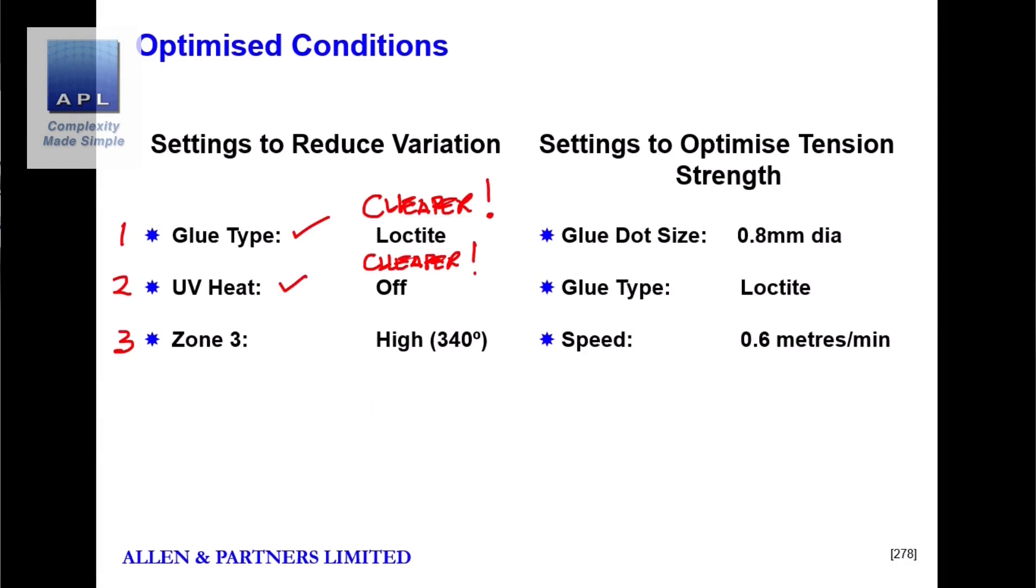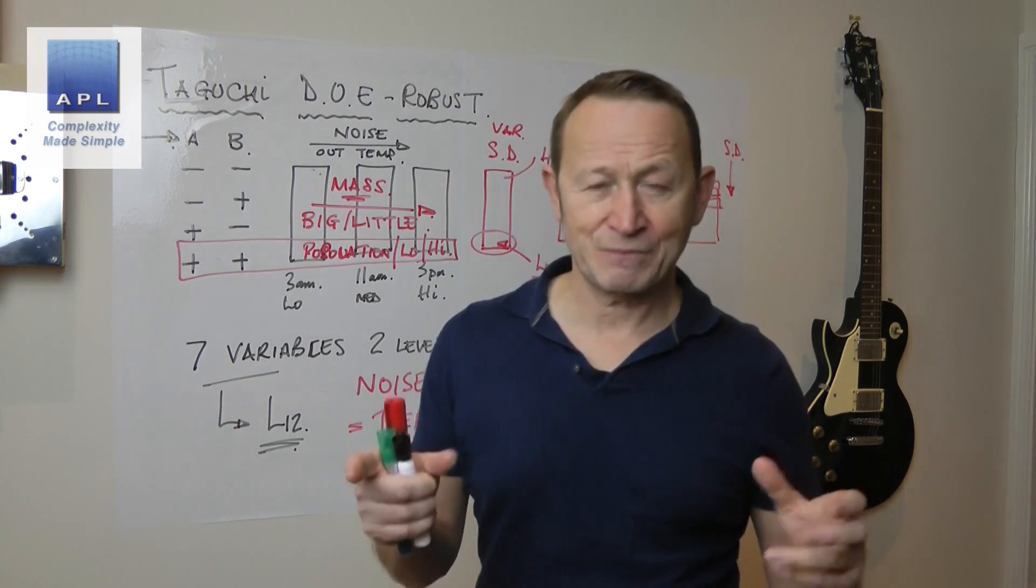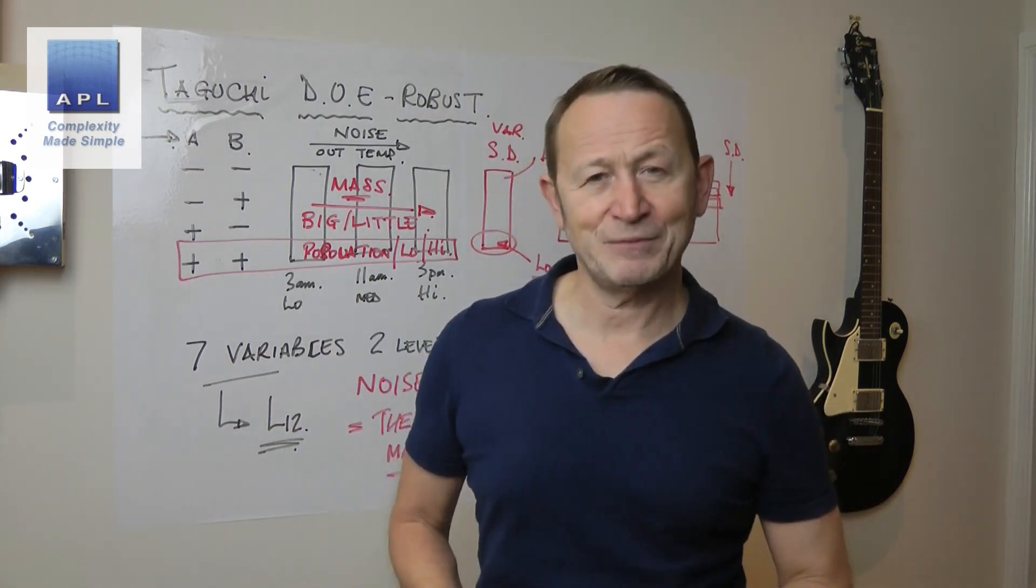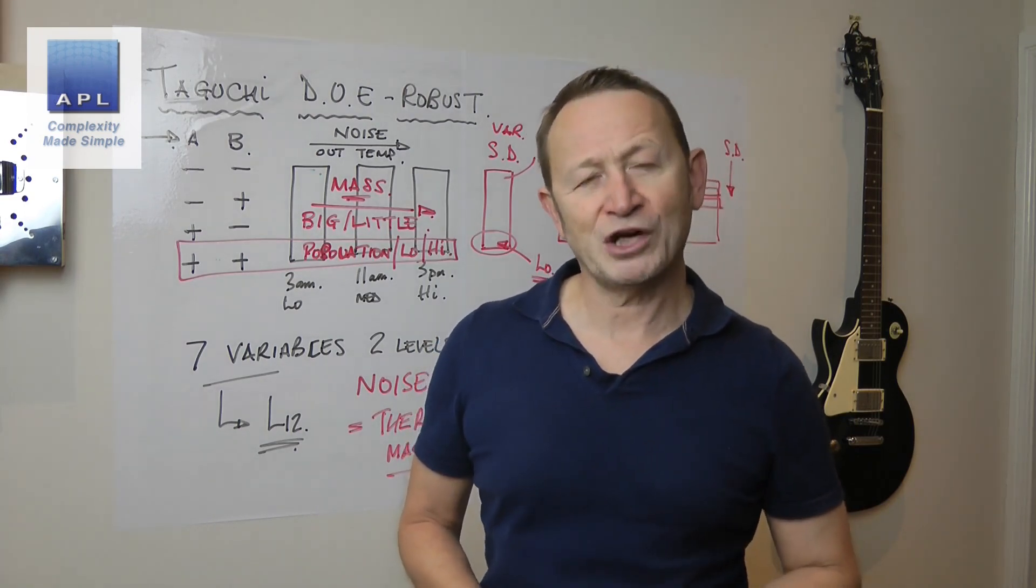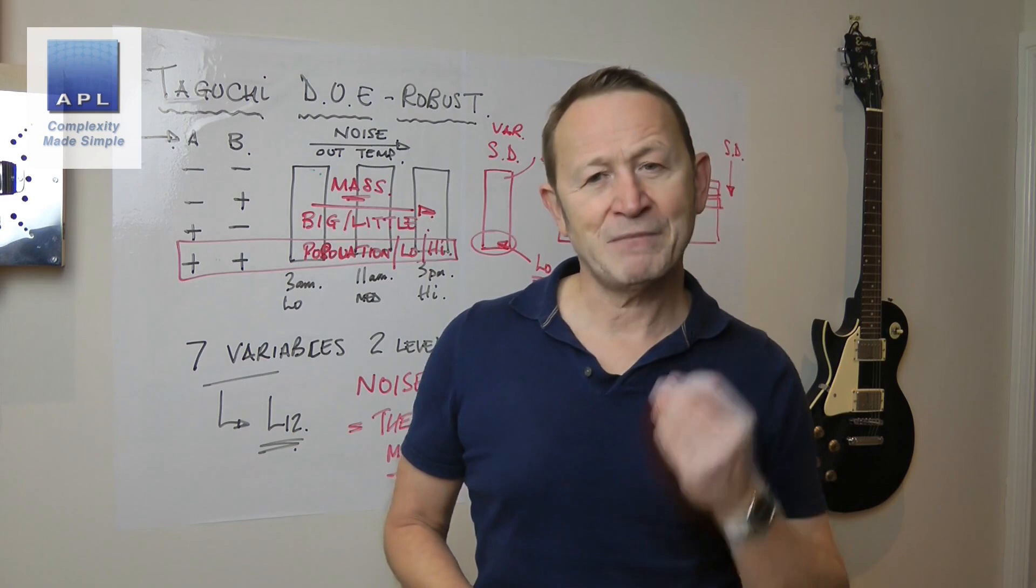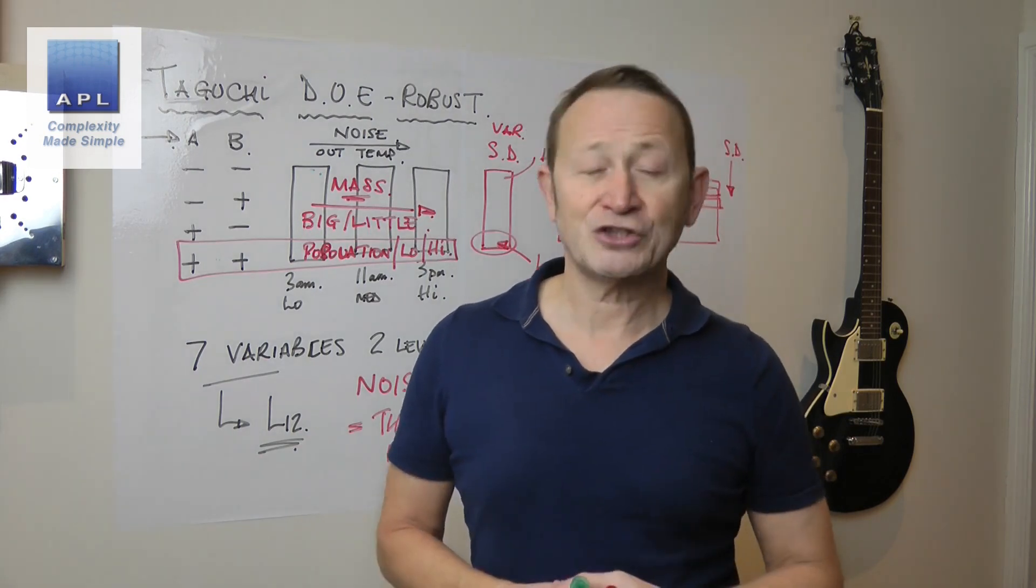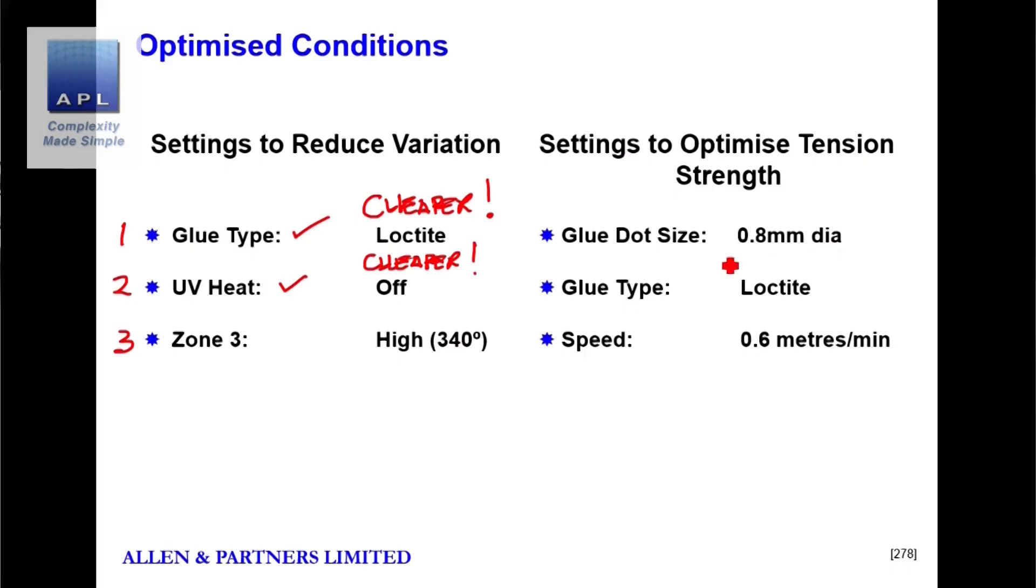So what we can do now is dial those three settings into the process and then test the capability of the glue strength. Now, of course, we can also optimise the glue strength, make the glue a little bit stronger maybe. And let's look at the three variables there. So we've done the analysis. And again, we've selected three variables that move the mean. Again, it's glue type. So again, it's Loctite. They're stronger as well as more consistent, as well as cheaper.